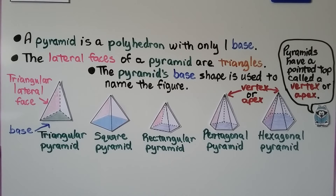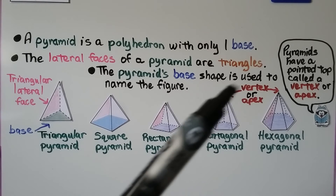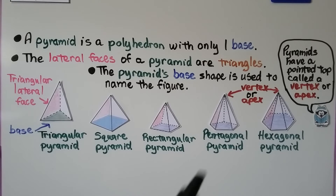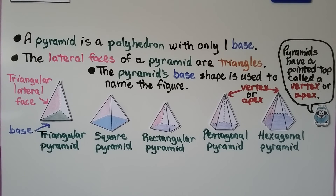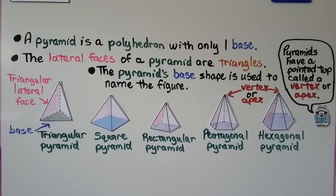A pyramid is a polyhedron with only one base, and the lateral faces of a pyramid are triangles. The pyramid's base shape is used to name the figure. Pyramids also have a pointed top called a vertex or an apex. A triangle base makes a triangular pyramid. A square base makes a square pyramid. A rectangle base makes a rectangular pyramid. A pentagon base makes a pentagonal pyramid. A hexagon base makes a hexagonal pyramid. They all have triangles for lateral faces.